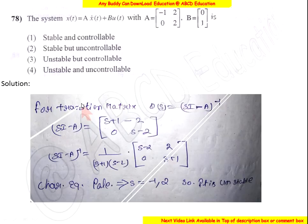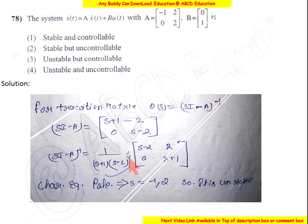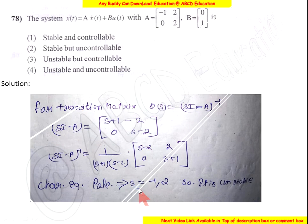Now come to the solution. We find the transition matrix of this system. The characteristic equation gives poles at S equals minus 1 and plus 2. Since this pole is in the right half of the S-plane, the system is unstable.